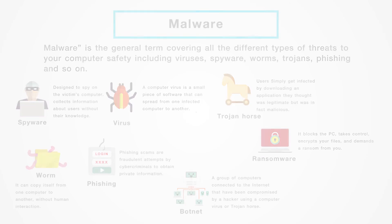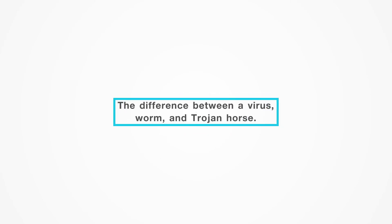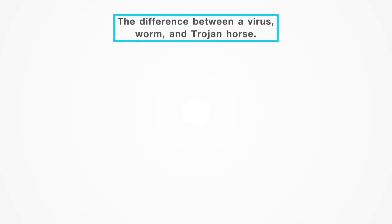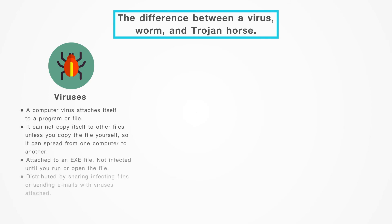The difference between a virus, worm, and Trojan horse: A computer virus attaches itself to a program or file. It cannot copy itself to other files unless you copy the file yourself, so it can spread from one computer to another. Almost all viruses are attached to an executable file, which means the virus may exist on your computer but cannot infect it unless you run or open the malicious program. People continue the spread of a computer virus by sharing infected files or sending emails with a virus as an attachment.